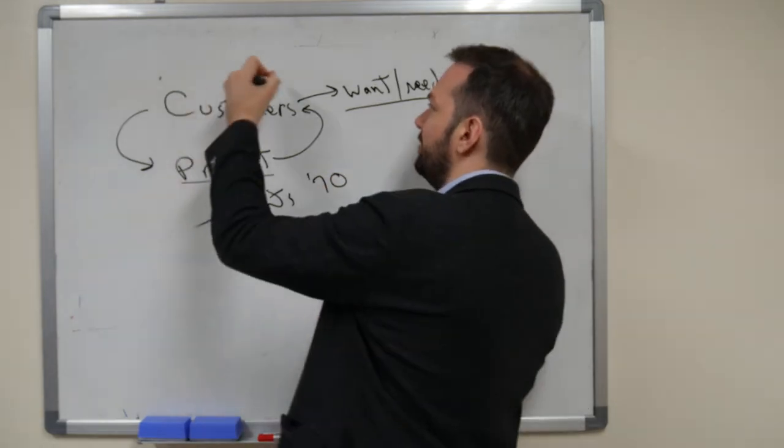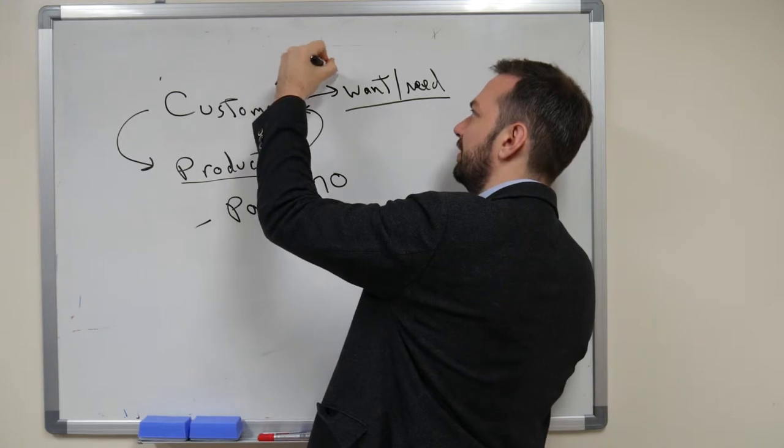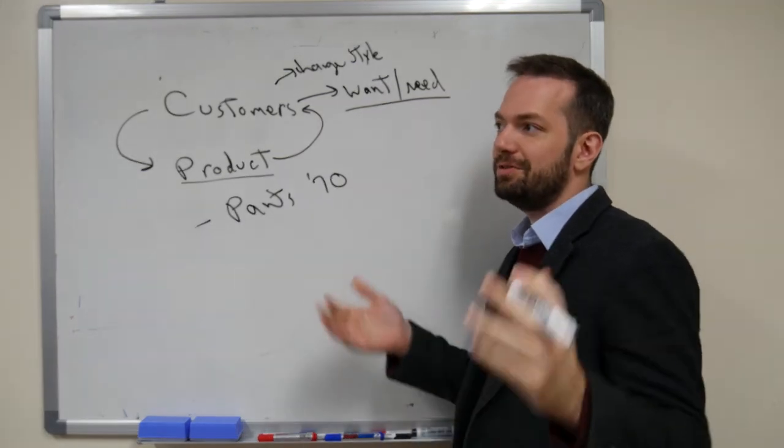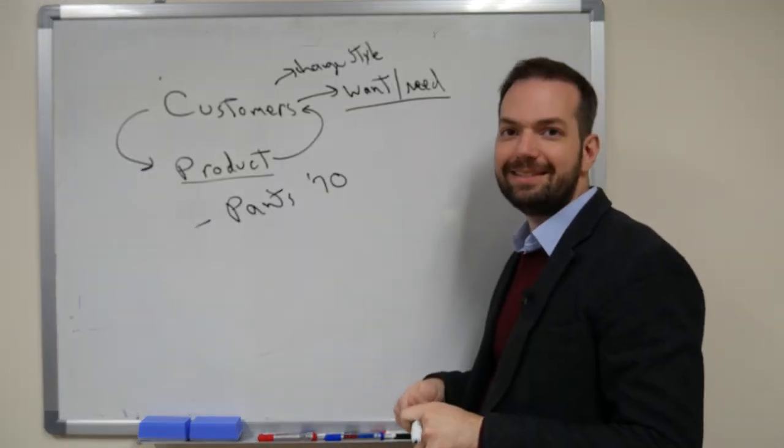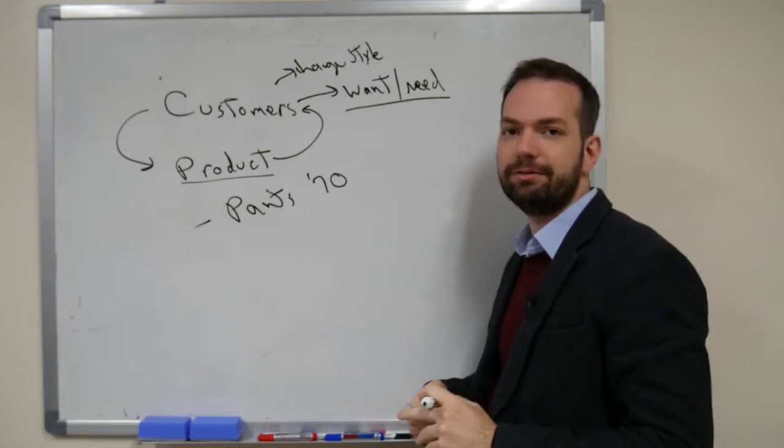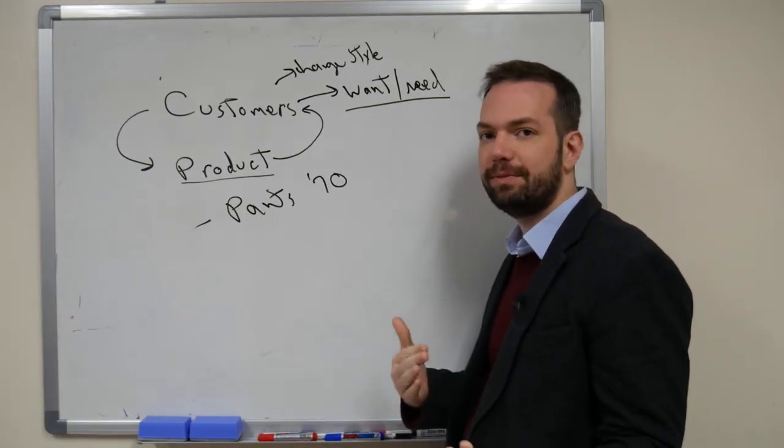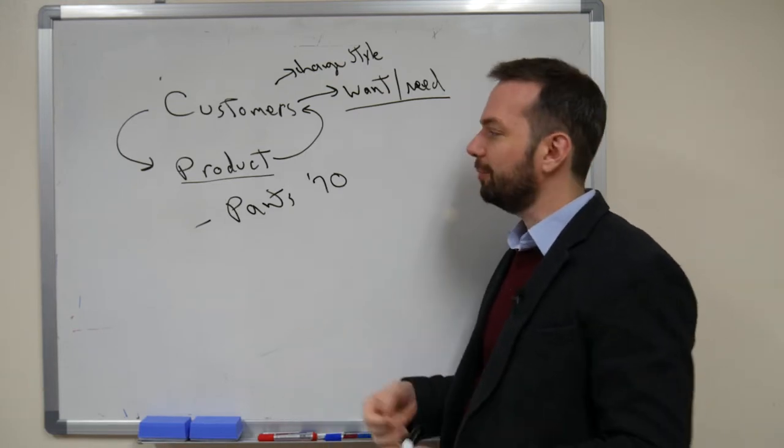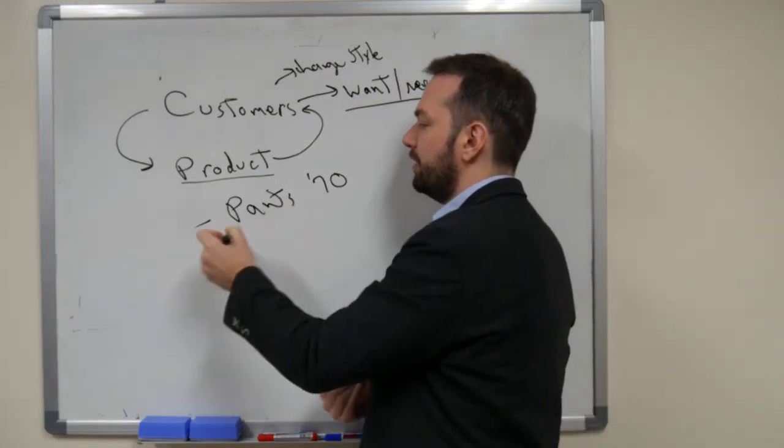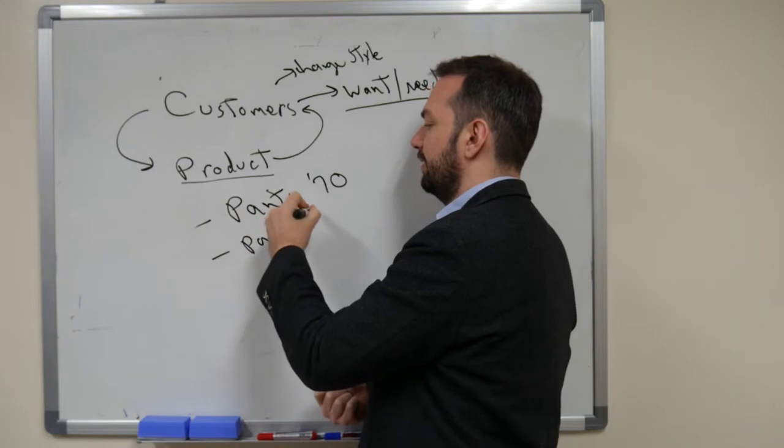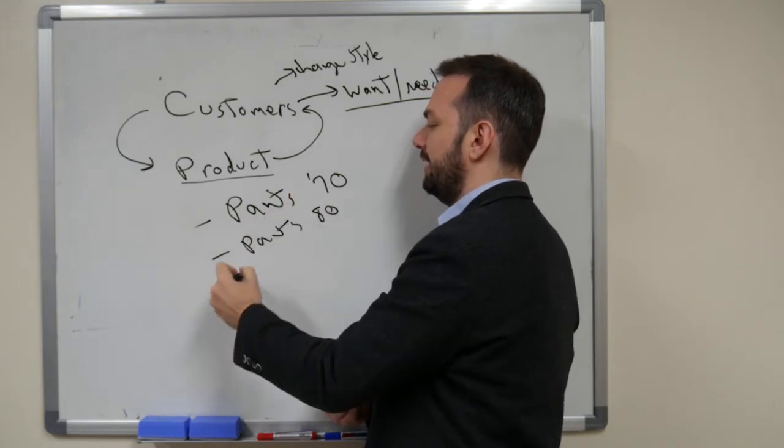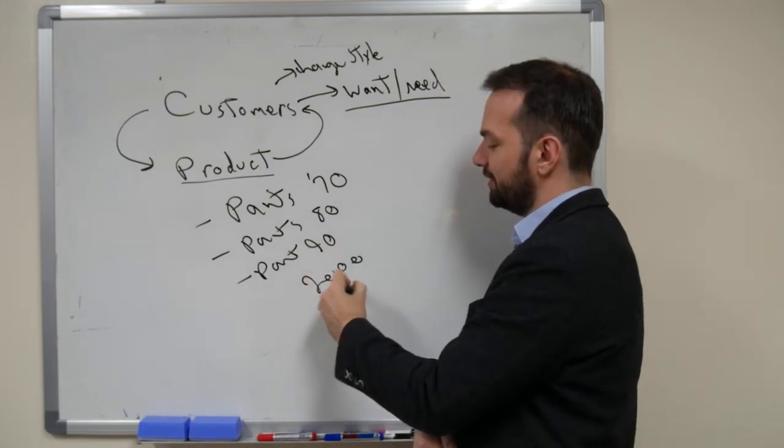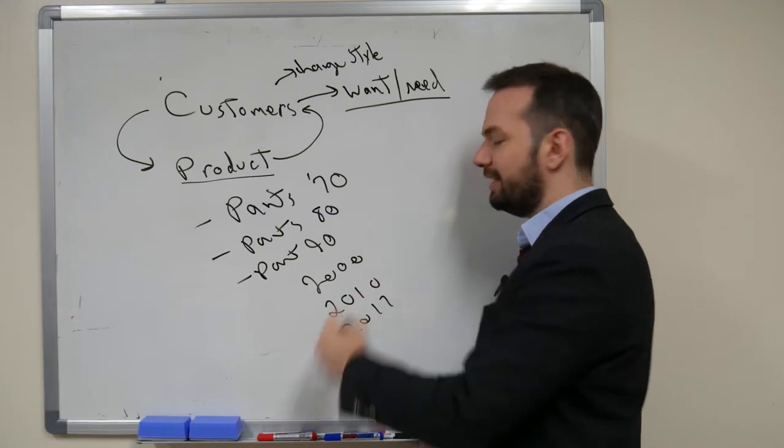So, changes in style. And even in the 2000s, 2010s, the style from 2000s are very different from the styles in the 90s. The 90s is very different from the 80s. Not only in Korea, pretty much everywhere. So, pants in the 70s actually have to change over time. So, maybe pants in the 80s, pants 80s, and then also pants 90s and 2000s, 2000s, let's say, 10s, and then 2017.